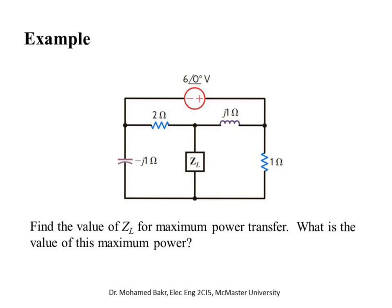Let's look at an example. We have a circuit with sinusoidal source 6∠0° (i.e., 6·cos(ωt)). We want to find Z_L for maximum power transfer and find the value of that maximum average power. We build the Thevenin equivalent by removing Z_L. To find Z_th, we eliminate all independent sources (short the voltage source) and find the input impedance seen at the load terminals.